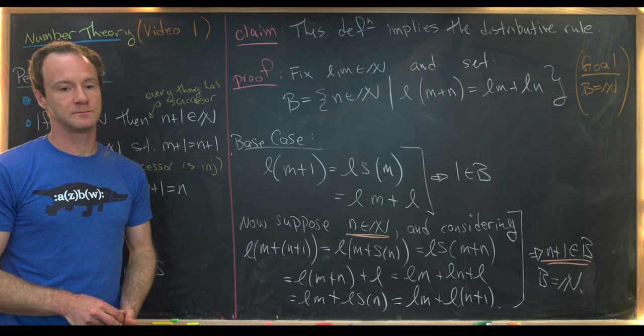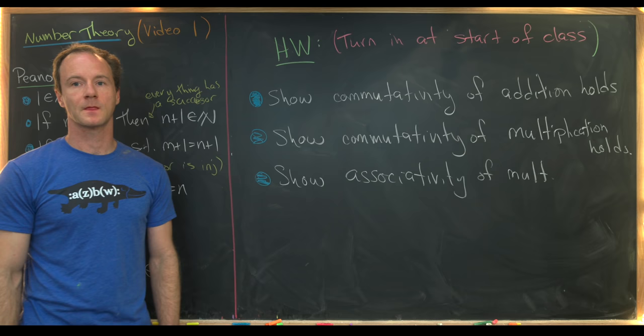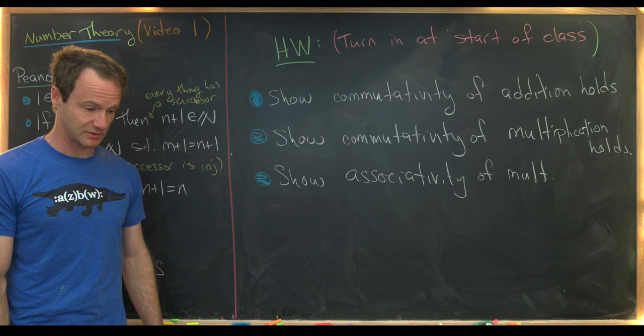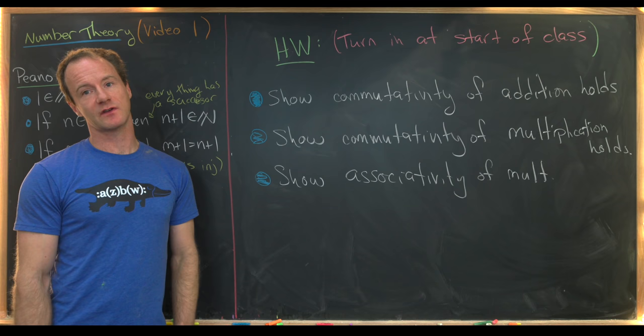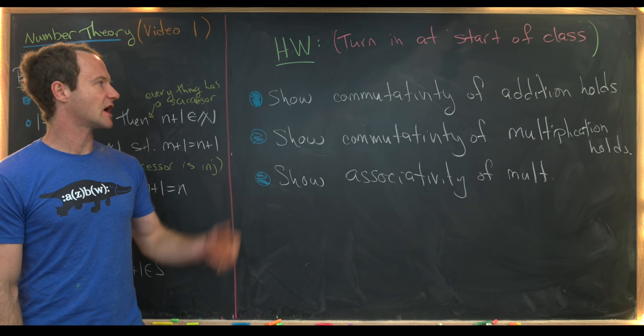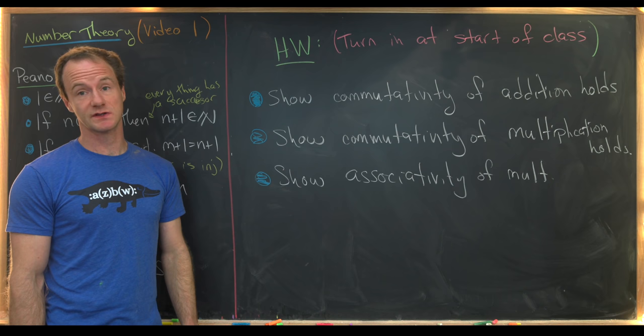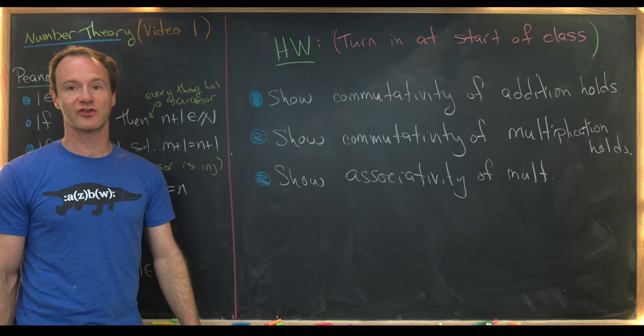The rest of the properties of the arithmetic of the natural numbers follow very similarly, so I'm going to leave those as homework. If you're in my course, turn them in at the beginning of class in the notebook we're keeping for these warmup problems. The three exercises are: show that commutativity of addition holds, show that commutativity of multiplication holds, and show that associativity of multiplication holds.